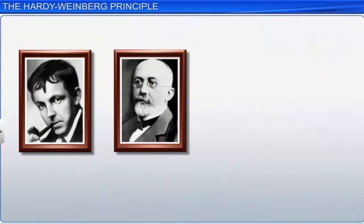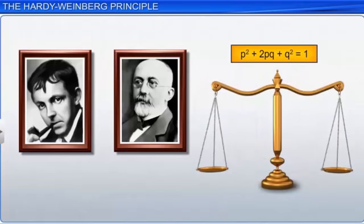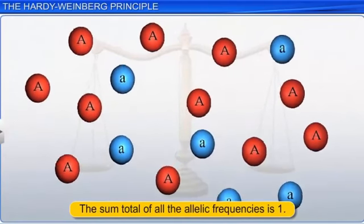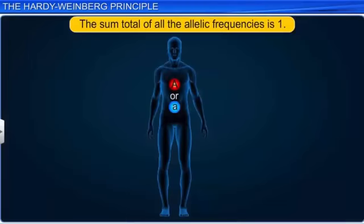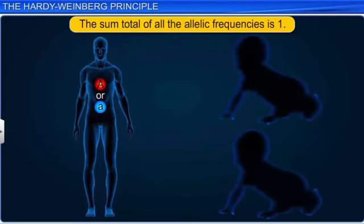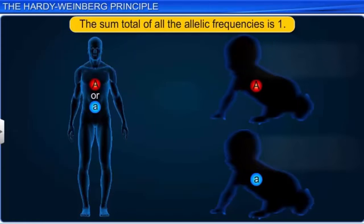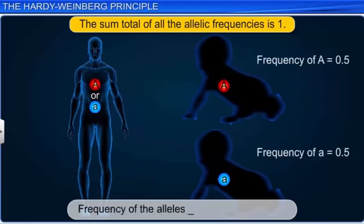Hardy and Weinberg developed a simple equation known as the Hardy-Weinberg equation to study the genetic equilibrium of a given population. The sum total of all the allelic frequencies is one. Generally, there are two forms of a gene, that is, two alleles for one character. Each of these alleles has an equal chance of getting inherited. Therefore, the frequency of the alleles would be 0.5 plus 0.5, which is equal to 1. Let us name some individual frequencies as P and Q.